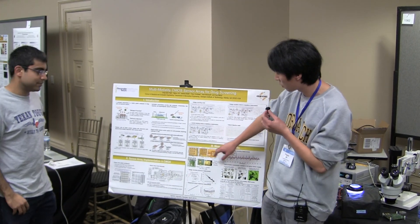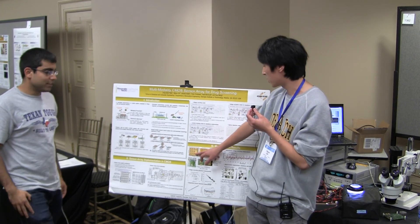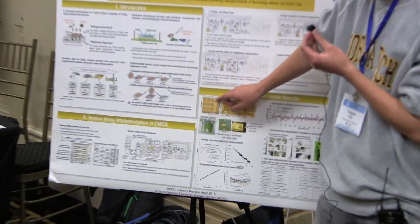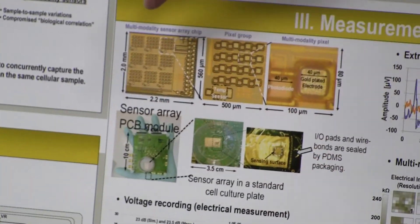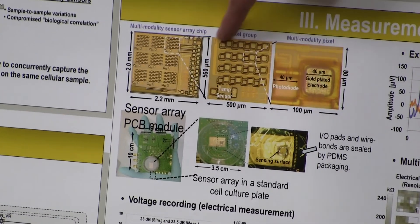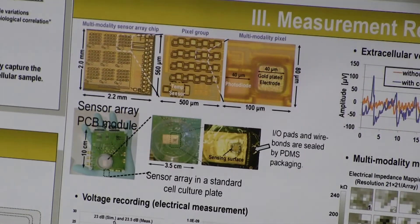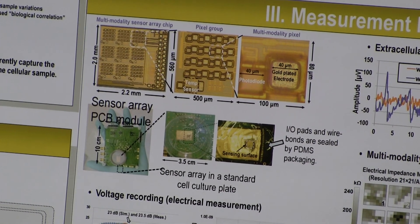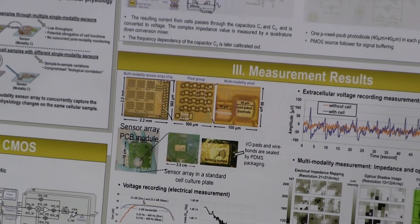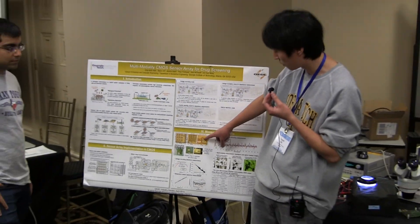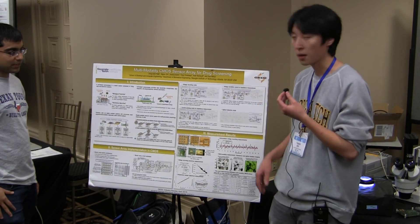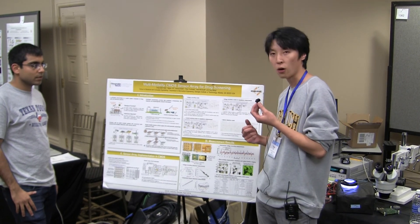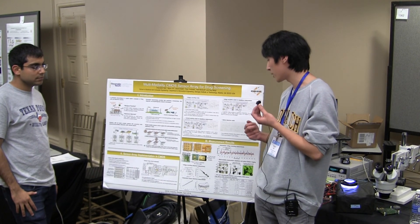This slide basically shows our die photo. We implemented the CMOS sensor in a 130 nanometer standard CMOS process. We have nine parallel pixel groups on this chip. Within each pixel group, we have 16 parallel pixels plus one temperature sensor. Within each pixel, we have one photodiode for light intensity or bioluminescence detection, and gold-plated electrodes which can measure voltage recording signals and cellular impedance. Together, we provide four orthogonal modalities from the cells.